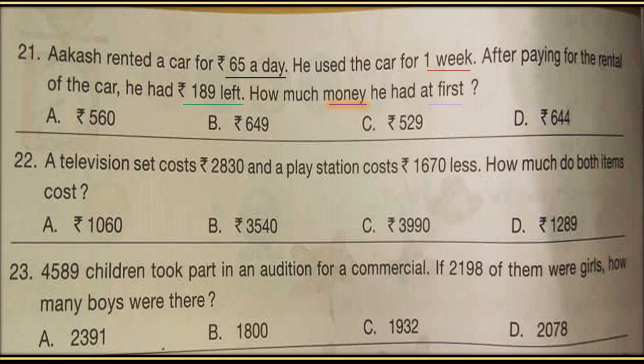Question number 23: 4589 children took part in an audition for a commercial. If 2198 of them were girls, how many boys were there? The total number of children who took part in the audition is 4589, and the number of girls is 2198. Calculate the number of boys.